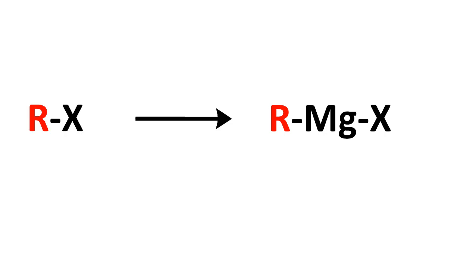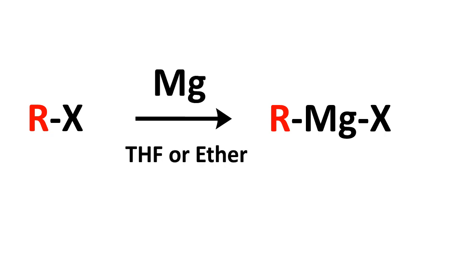This Grignard reagent is formed when an alkyl halide — such as methyl bromide, ethyl bromide, ethyl chloride, or ethyl iodide — is treated with magnesium in the presence of anhydrous THF or ethereal solvents. The ethereal solvents are required to stabilize the complex formed by the Grignard reagent. What happens is the magnesium inserts into the alkyl halide bond, the R–X bond, to give the Grignard reagent.